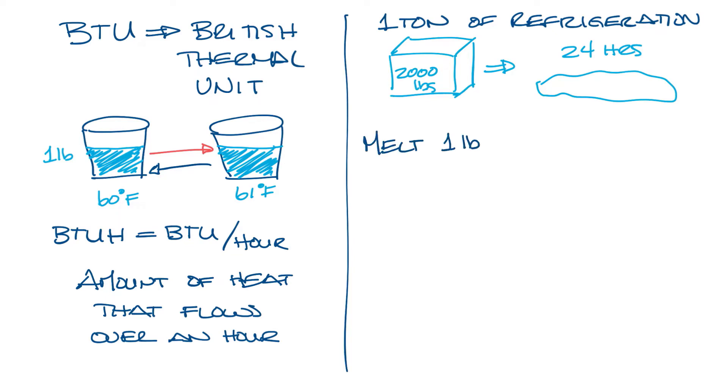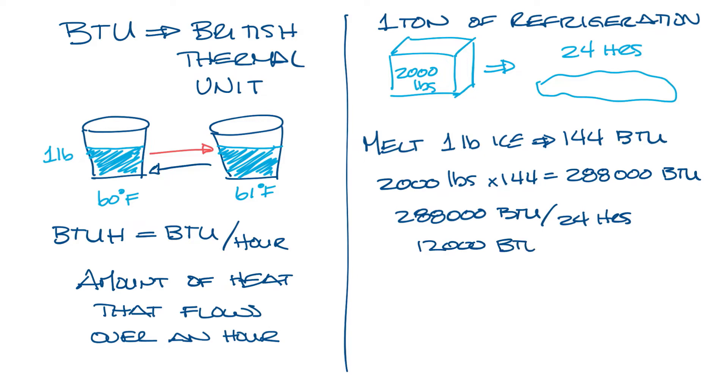When one pound of ice melts, it absorbs 144 BTU. For 2,000 pounds of ice, that would absorb 2,000 times 144 is 288,000 BTU within 24 hours. So this is 288,000 BTU divided by 24 hours is 12,000 BTU hours, and that equals one ton of refrigeration.